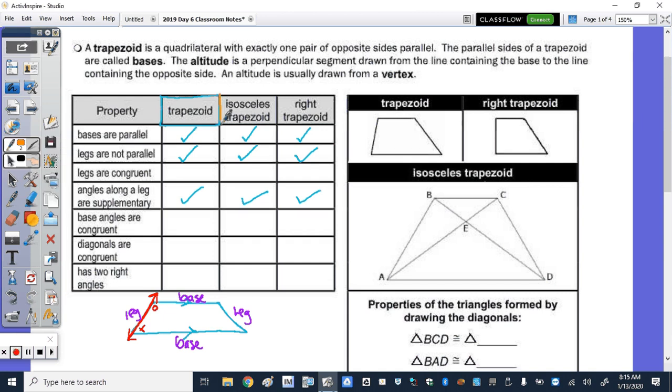When we specify that it's an isosceles trapezoid, an isosceles trapezoid has the legs congruent, its base angles are congruent, the diagonals are congruent, and it does not have two right angles. What has two right angles is our right trapezoid. So let's move to the right trapezoid. Here are our bases which are parallel and then here are the two right angles in the right trapezoid. Okay, so let's note the bases parallel.